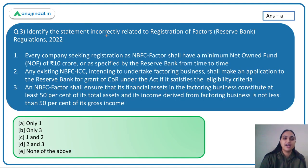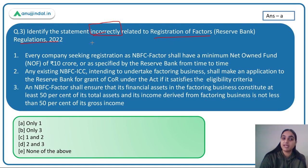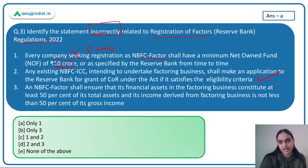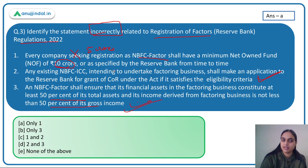The third question asks: identify the statement incorrectly related to the registration of factors regulation. The first statement says the minimum net owned fund for an NBFC factor is 10 crores — this is incorrect; it's 5 crores. The second says any existing NBFC ICC wanting to undertake factoring needs to apply to RBI if it satisfies the eligibility criteria — this is correct. The third says NBFC factor shall ensure its financial assets constitute 50% of total assets and income is 50% of gross income — this is the principal business criteria and is correctly mentioned. So only the first statement is incorrect. The answer is option A.